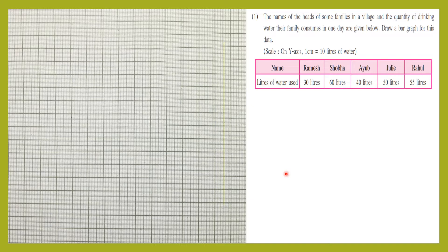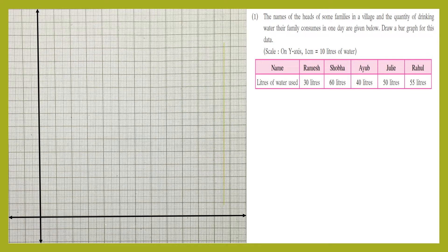Now let's start drawing the graph. We are going to draw one horizontal line, which is going to be called the X-axis. Next, we'll be leaving two centimeters from the left and drawing a vertical line called the Y-axis. Let's label them: X-axis will be labeled with capital X, Y-axis will be labeled as capital Y.